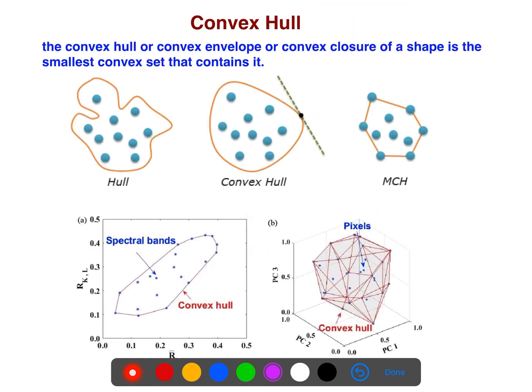So before I begin, I need to just remind you about the convex hull. For example, in 3D, you will see a convex hull like this. The convex hull, or convex envelope, or convex closure of a shape is the smallest convex set that contains it.